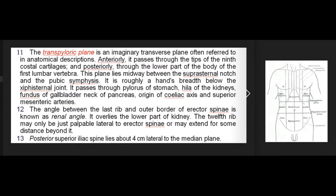The transpyloric plane is an imaginary transverse plane often referred to in anatomical descriptions. Anteriorly, it passes through the tips of the 9th costal cartilages, and posteriorly through the lower part of the body of the first lumbar vertebra. This plane lies midway between the suprasternal notch and the pubic symphysis, roughly a hand's breadth below the xiphosternal joint. It passes through the pylorus of the stomach, hila of the kidneys, fundus of gallbladder, neck of pancreas, and origin of the coeliac axis and superior mesenteric arteries.